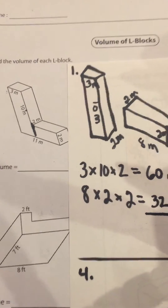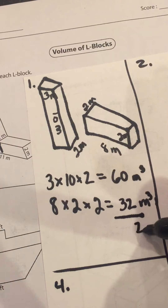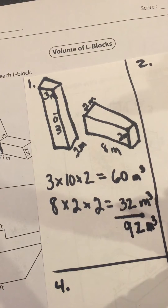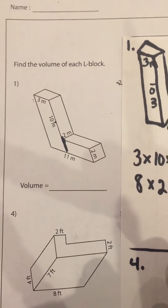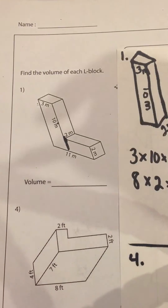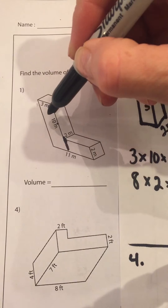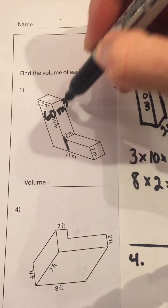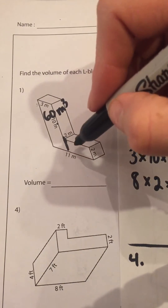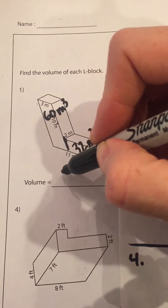We're going to add 60 plus 32 and we are going to get 92 cubic meters. Let's go back to our original L-shaped block and record what we just figured out. We determined that the volume of the top shape was 60 cubic meters and the bottom piece was 32 cubic meters, and when we added them together we had 92 cubic meters.